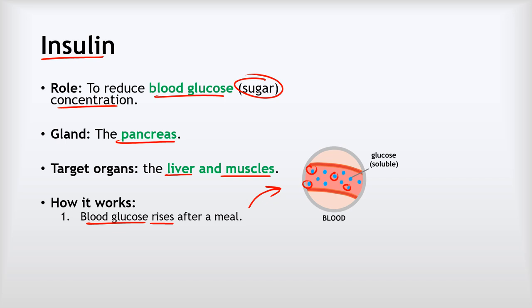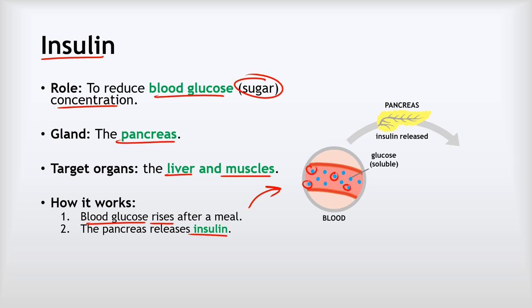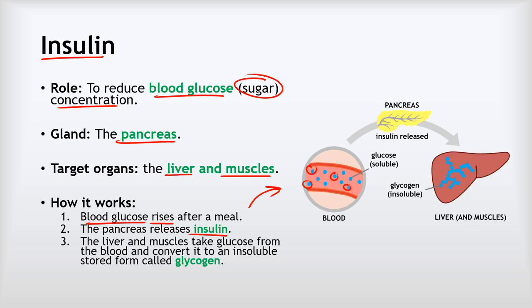If that glucose concentration were to stay high, it can cause all sorts of damage to our cells, so we've got to find a way of reducing it. That's where insulin comes in. The insulin is released by the pancreas when it detects that high blood glucose concentration. What it does is tell the liver and the muscles to take glucose in from the blood and convert it into an insoluble stored form called glycogen. That has the effect of reducing the blood glucose concentration back towards a safe level.